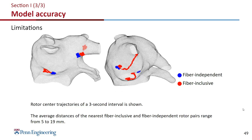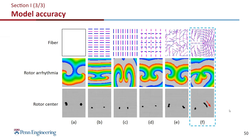We do have limitations, mostly from not having fiber data. For the identification of latest activation regions, figure B shows our model predicts some regions but misses one, though most of the time the model is quite accurate — figure A shows all three latest activation locations are predicted. Another limitation is simulating meandering rotors: the blue dots are the rotating centers of our fiber-independent model and the red dots are rotor centers of a fiber-inclusive model. If the heart includes fibers, the rotors can shift, but our model's rotor does not shift. We investigated what causes this — the fiber gradient has a large effect on rotor drifting. When a fiber has a continuous large curvature, it makes the center of rotation drift as shown by the red arrow.